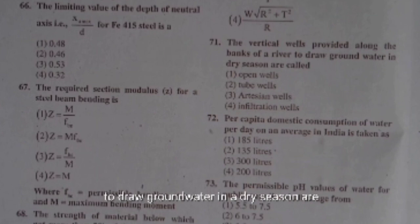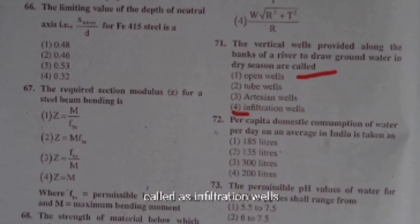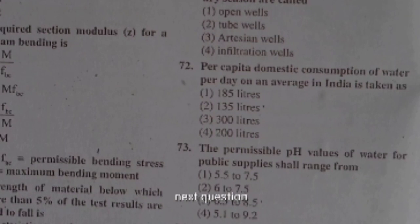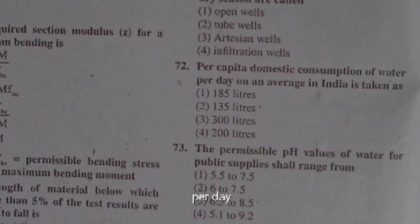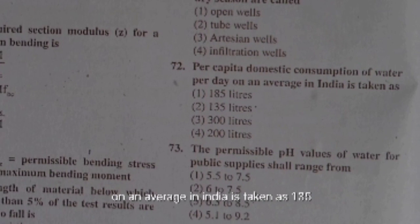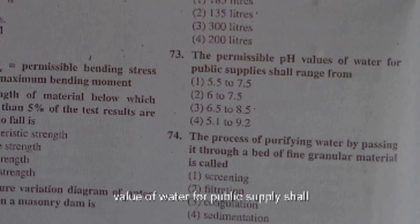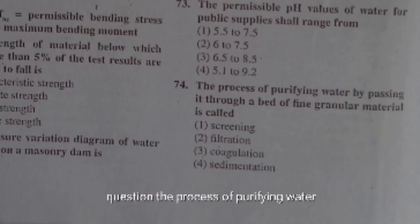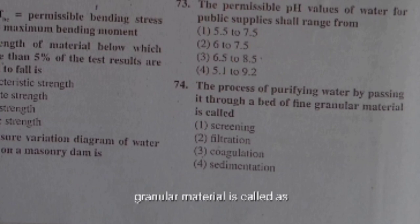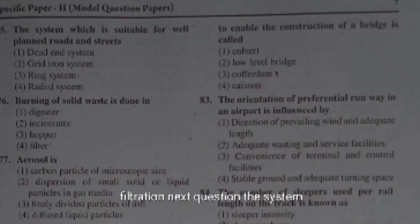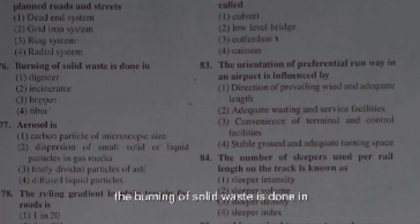Per capita domestic consumption of water per day on average in India is taken as 135 litres. The permissible pH value of water for public supply shall be in the range of 6.5 to 8.5. The process of purifying water by passing it through a bed of fine granular material is called filtration. The system suitable for well-planned roads and streets is the ring system or circular system.